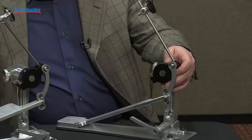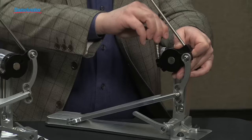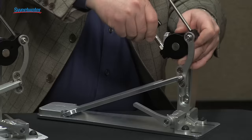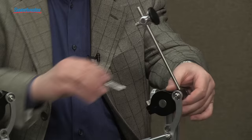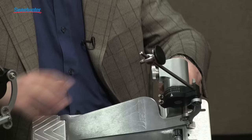Another adjustment is here, where you have an independent footboard angle adjustment. And that's all simply done by loosening a drum key. Next to that, you have your independent beater angle adjustment. So anywhere you want to put it, you can do that simply by loosening that screw and adjusting it.